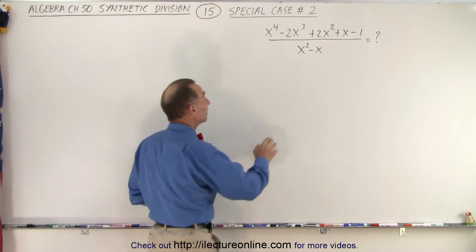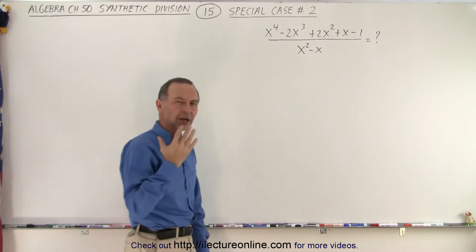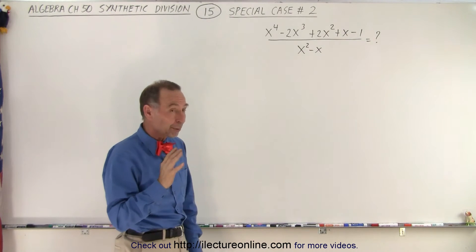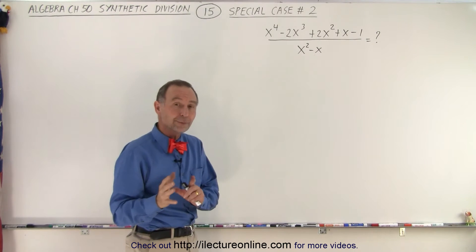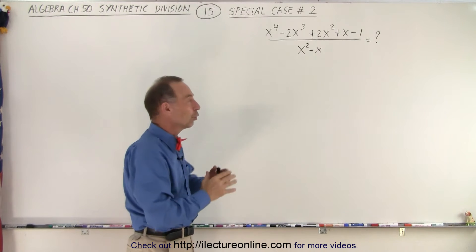Notice in the denominator it's x squared minus x. And the constant term is missing and remember what we always need to do. If there's a term that is missing we need to have a placeholder.